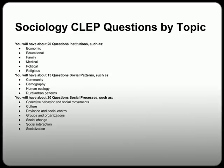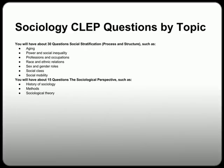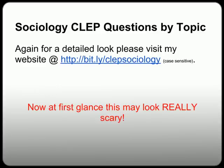There are five sections on the exam. You're going to have 20 questions on institutions like family, politics, and religion. You're going to have 15 questions on social patterns like community, demographics, rural versus urban. You're going to have 20 questions on social processes like culture, groups, and interaction. You're going to have about 30 questions on social stratification like age, race, sex, etc. And you're going to have about 15 questions on social perspectives like history, methods, and theories. If you need that list again, you can go to my website at bit.ly/CLEPSociology.